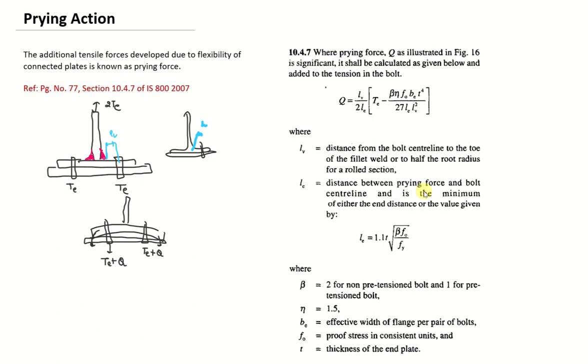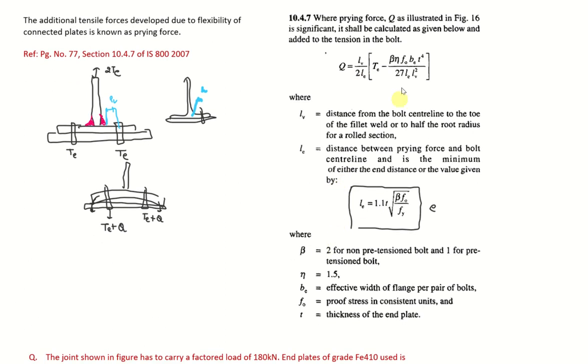Le is a distance between the prying force and the bolt centerline and it's a minimum of either end distance or the value given by this. So it is given by an expression and that has to be compared with the end distance e. So whichever is less we have to consider. And we will be also having the beta as a constant predetermined. That value is 2 for non-pretension bolt and 1 is for pretension bolt.